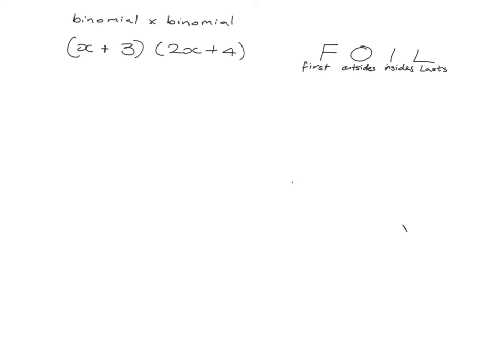We're going to continue looking at multiplying out using the distributive law, but today we're going to deal with a situation where we've got a binomial multiplied with a binomial. Now what do we mean by binomial? Remember that word — the little prefix 'bi' means two. In other words, it's something that has got two terms.